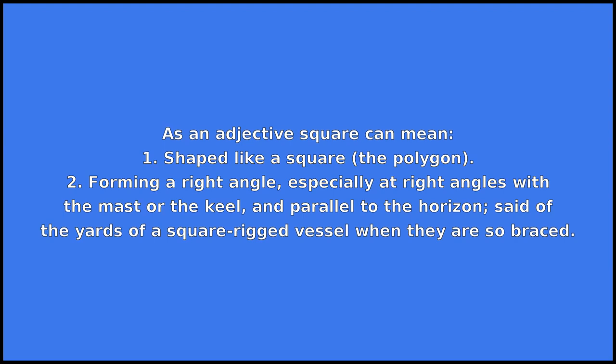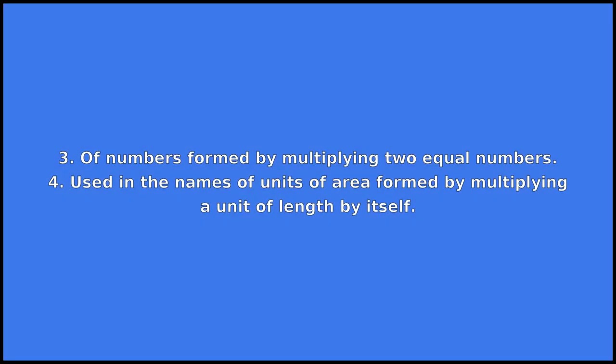1. Shaped like a square, the polygon. 2. Forming a right angle; especially at right angles with the mast or the keel and parallel to the horizon; set of the yards of a square rigged vessel when they are so braced. 3. Of numbers formed by multiplying two equal numbers.